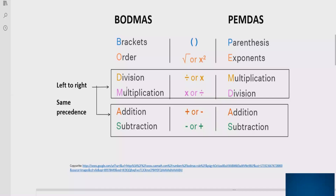After the bracket, you have to look at the power of any number given in the expression, and solve that part next. Step number three, you solve division and multiplication — both have similar precedence, so you solve whichever is coming first going left to right.